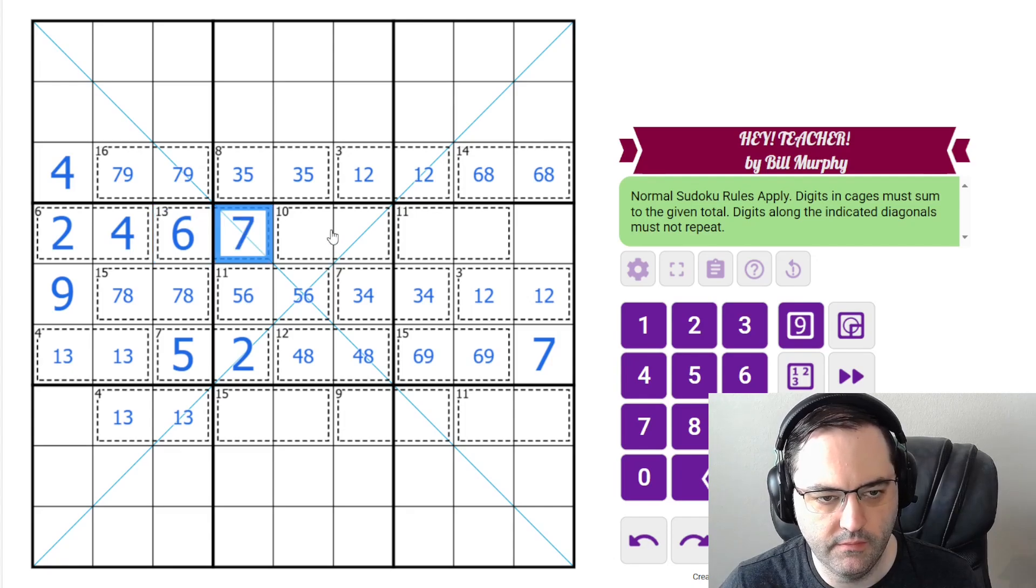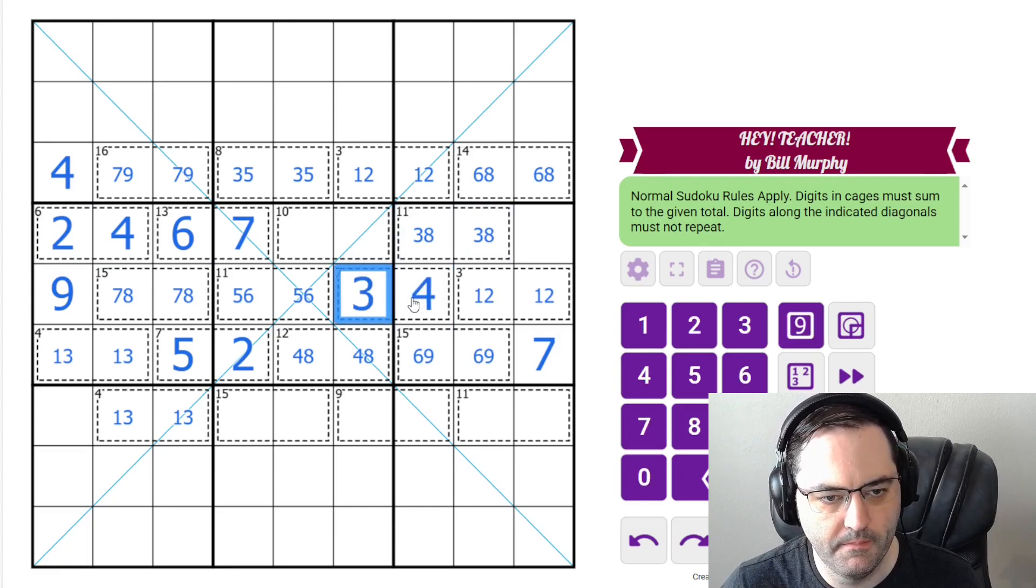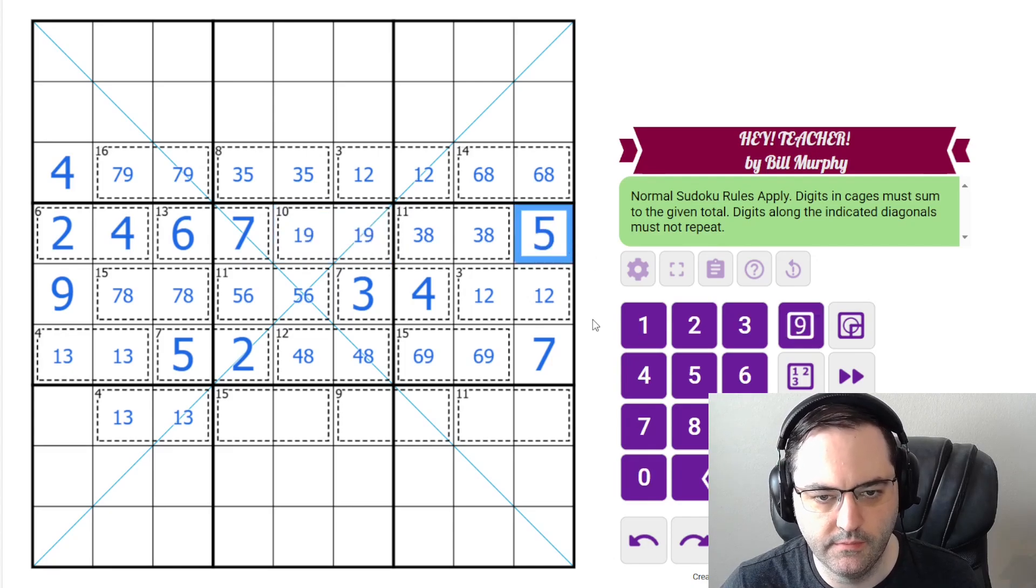The last digit in this box is a 6. So that gives us a 7 for the 13. 11 can't be 2, 9, 5, 6, or 4, 7. So it must be 3, 8. And that means this must be a 4, because we already have a 3 here. The 10 must be 1, 9. And this is 5.